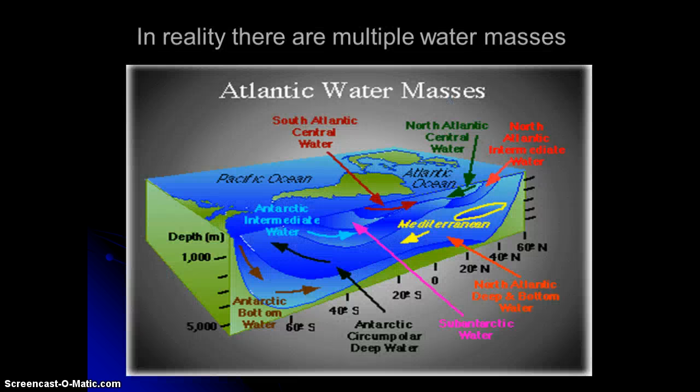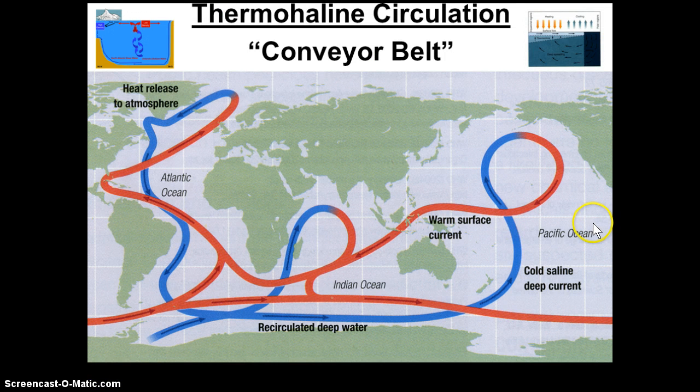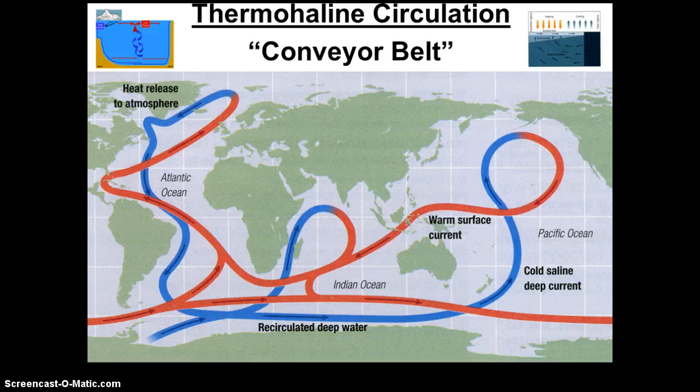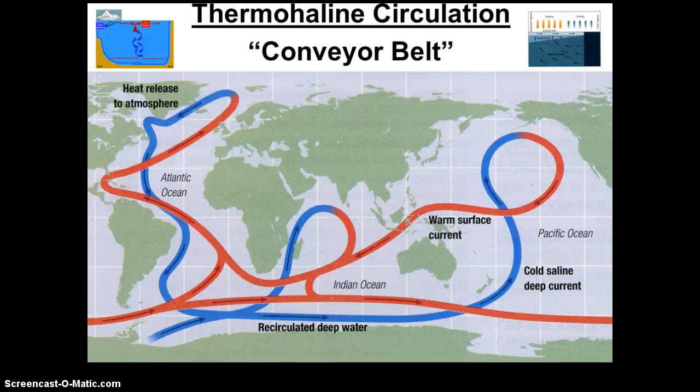And that is the basis for what drives those processes that are essentially what drives the largest scale pattern of ocean circulation that we call thermohaline circulation or the conveyor belt.